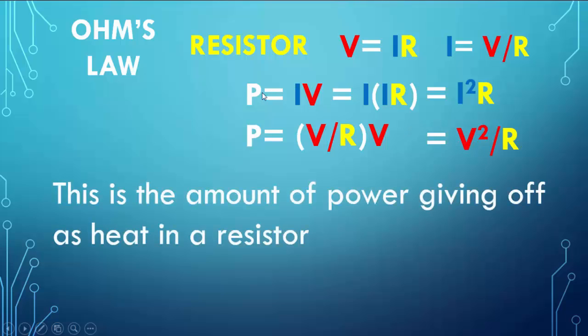Now what does this P describe? This is the amount of power given off as heat in a resistor. So whenever current flows through a resistor, it dissipates as heat.